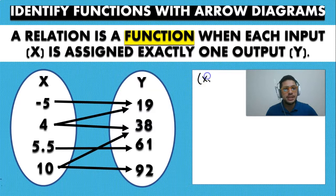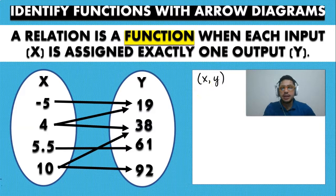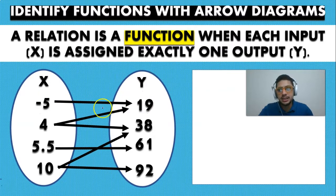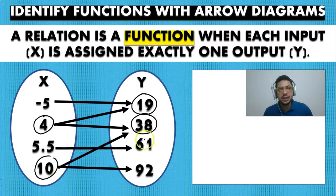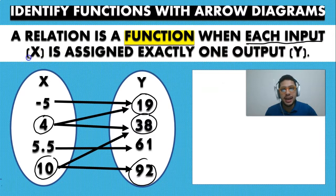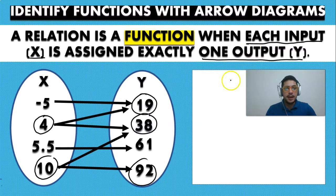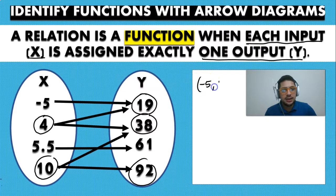Now we have to ask whether it's a function. We write down X and Y and check for repeated values of X. At a glance, five point five has one value of Y which is nineteen, but four has two values of Y: nineteen and thirty-eight. Also, ten has two values of Y: thirty-eight and ninety-two. Remember, each input or value of X must map to exactly one value of Y — not two.